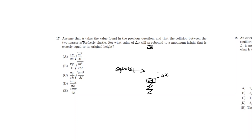And that's what the delta H is. Basically what this question is saying is: for what value of delta X will this mass rebound to its original height if they are colliding at the equilibrium point?